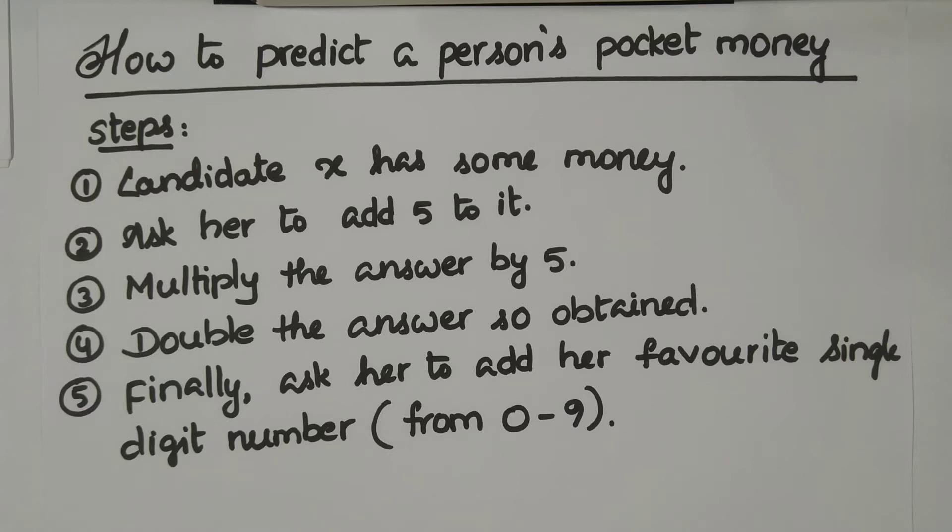Greetings. In our last lecture, we revealed the secret behind predicting a person's date of birth, one of the finest magics of Vedic mathematics. In this lecture, we will predict a person's pocket money. Interesting, right? It involves just five steps, only five steps.